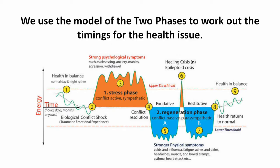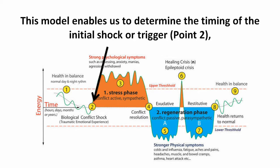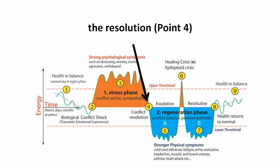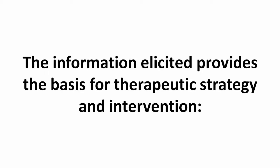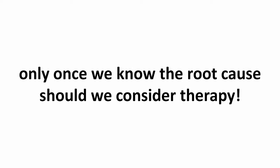We use the model of the two phases to work out the timings for the health issue. This model enables us to determine the timing of the initial shock or trigger at point 2, the resolution at point 4, and how long it will be before the symptoms abate at point 8. The information elicited provides the basis for therapeutic strategy and intervention, but only once we know the root cause should we consider therapy.